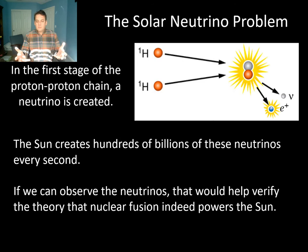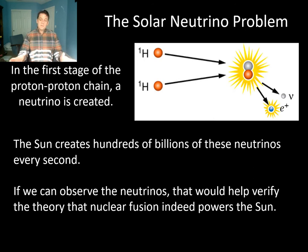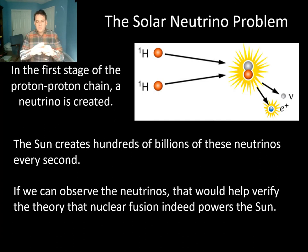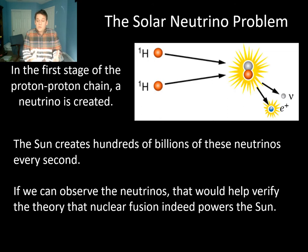Once scientists understood the nuclear physics powering the Sun, it's straightforward to calculate how many neutrinos are produced every second and how many should reach Earth. This provided a great test of whether the nuclear physics was correct. The theorists did their calculations and predicted a specific number of neutrinos that should reach Earth every second.